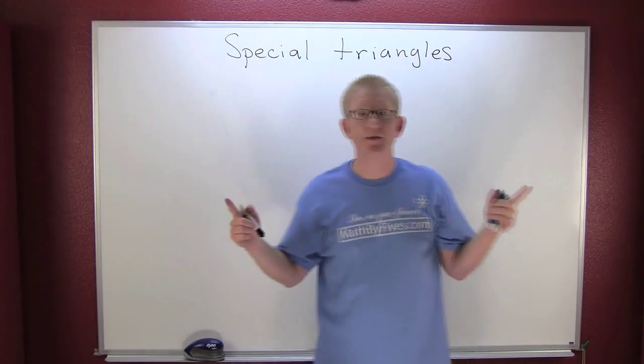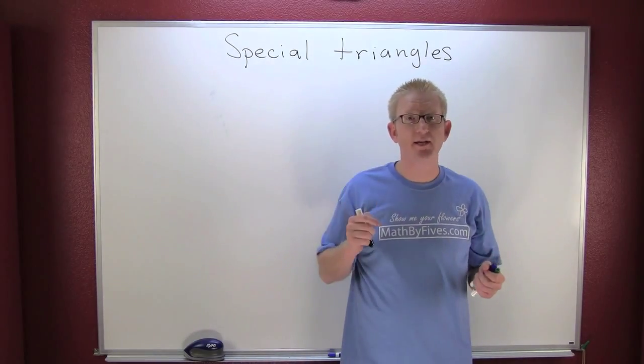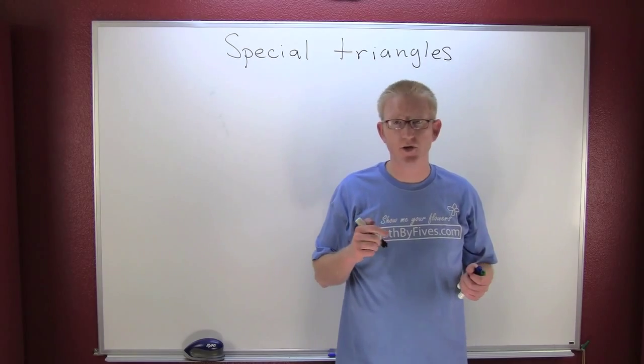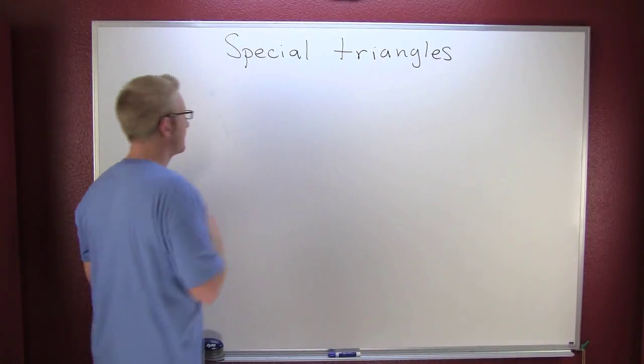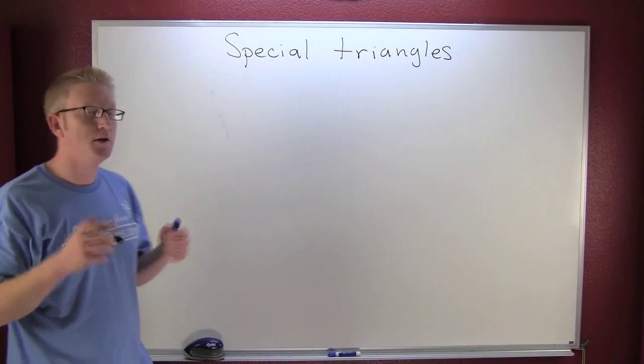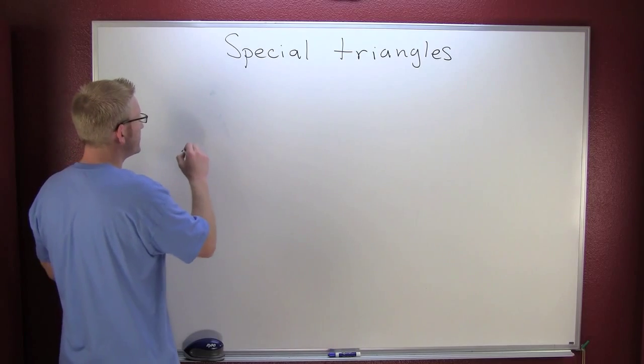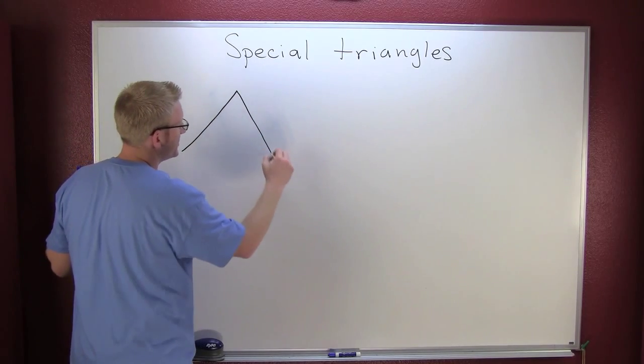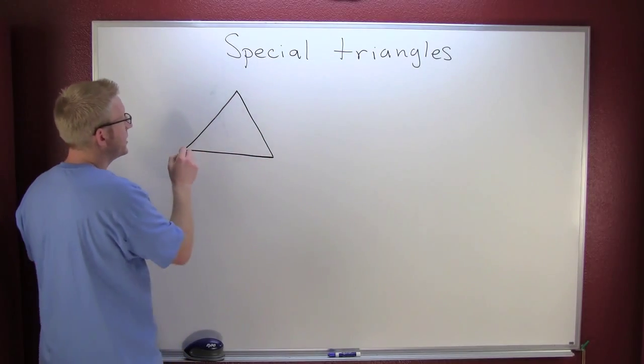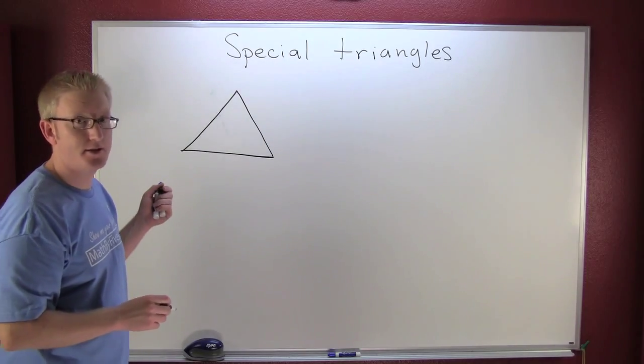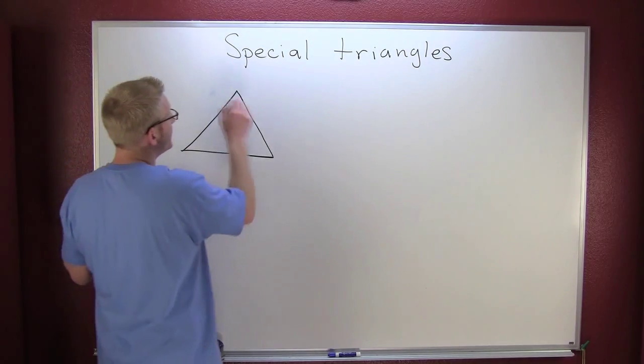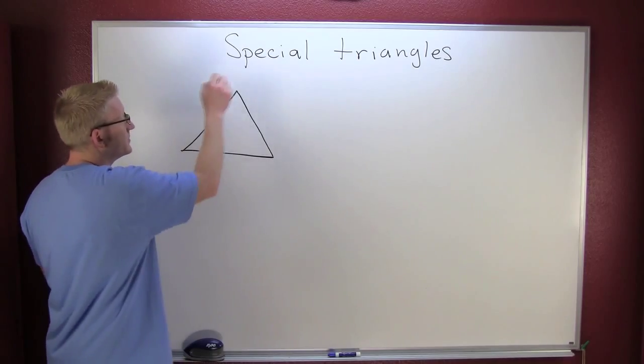In order to take a look at the 30-60-90, we need to take a look at an equilateral triangle. Equilateral triangle means that all the sides are the same, and then from geometry if all the sides are the same then so are the angles.